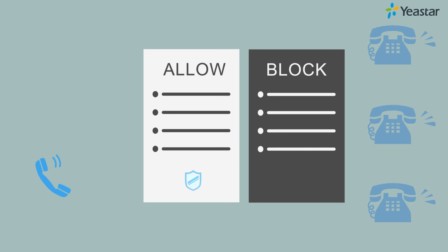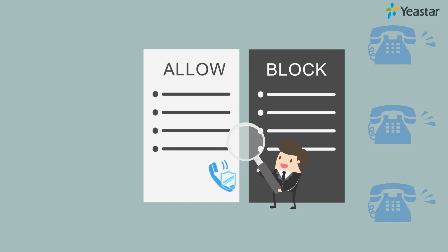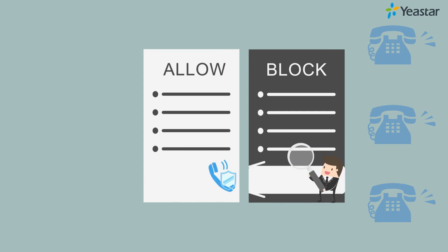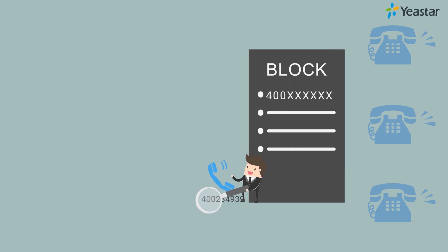The allow list allows you to add dependable incoming and outgoing numbers, which has higher priority than the block list. For example, if you have a block list rule which blocks all numbers starting with 400, but your customer's number also matches that specific rule,